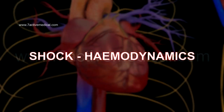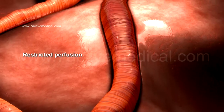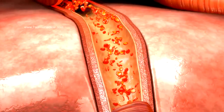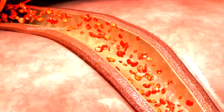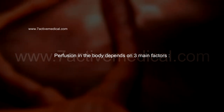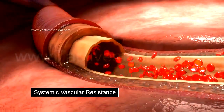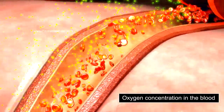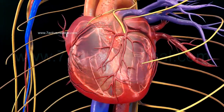Shock Hemodynamics. Shock is a state of restricted perfusion, or blood flow, to the various tissues of the body. Perfusion rate can be measured in terms of liters per minute of blood upon grams of tissue perfused. Perfusion in the body depends on three main factors: 1. Cardiac output, 2. Systemic vascular resistance, 3. Oxygen concentration in the blood. Cardiac output is the amount of blood pumped out of the heart per minute and is proportionate to the rate of perfusion.